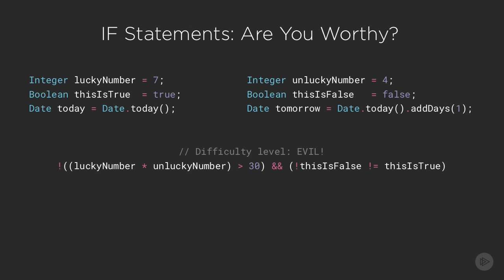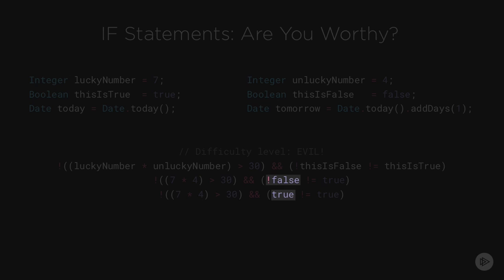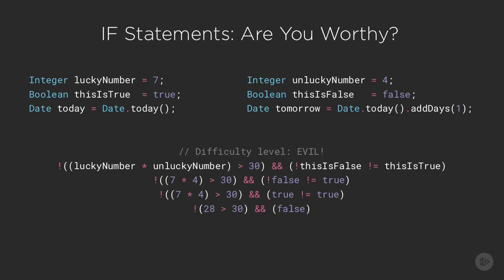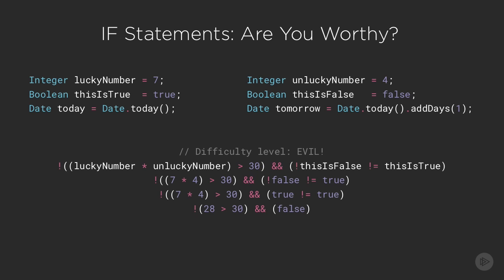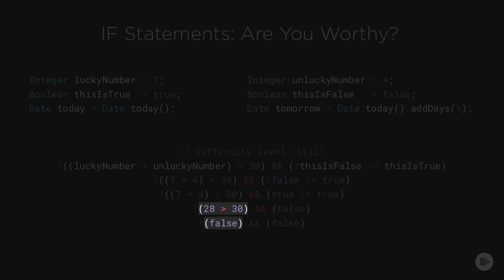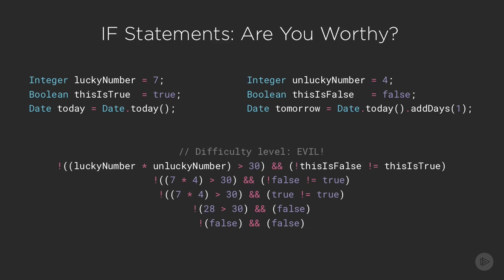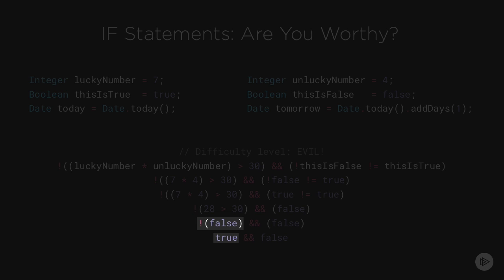Alright, what the heck is going on here? Let's tackle this one step at a time. First, we do nothing but substitute in our variable values. Next, let's flip this to true because it has an exclamation point by it. Alright, time to evaluate the innermost parentheses. 7 times 4 turns into 28. We continue evaluating everything inside parentheses before moving forward. And now we flip the value on the left again because of the exclamation point.